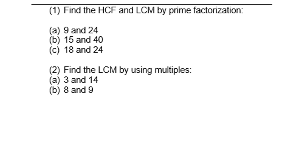Now let's look at a few examples. Find the HCF and LCM by prime factorization of: 9 and 24; 15 and 40; 18 and 24. And secondly, find the LCM by using multiples for: 3 and 14; 8 and 9.